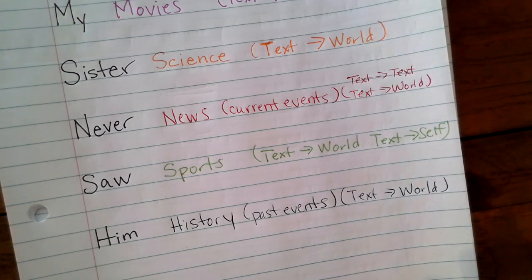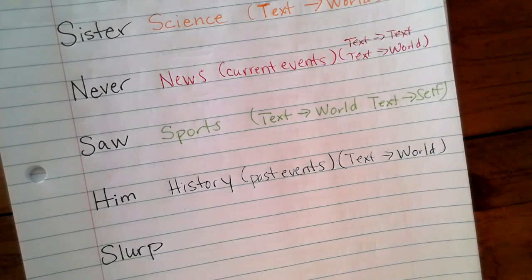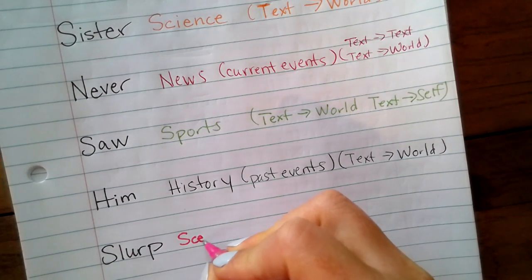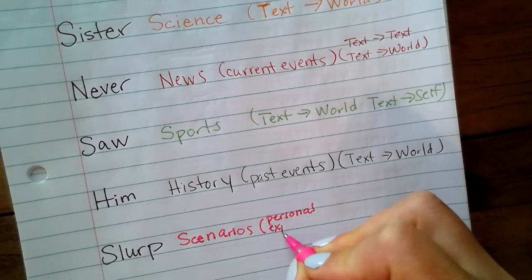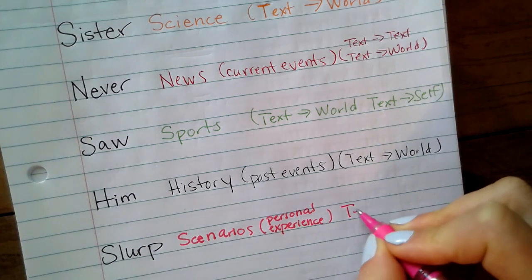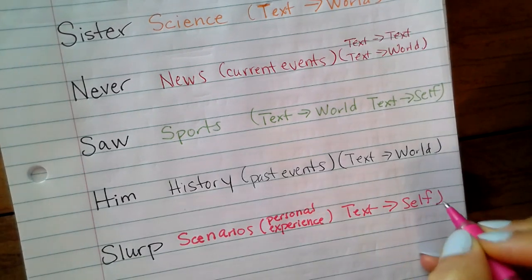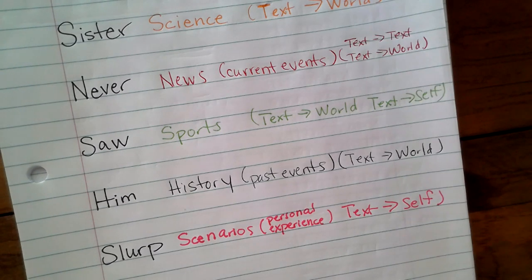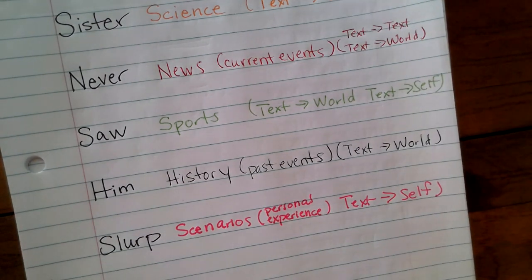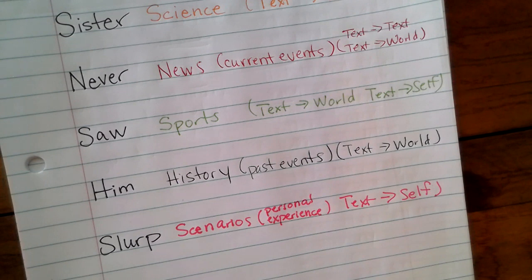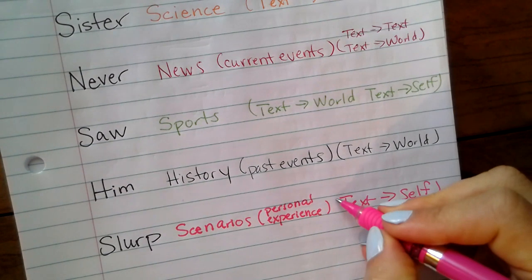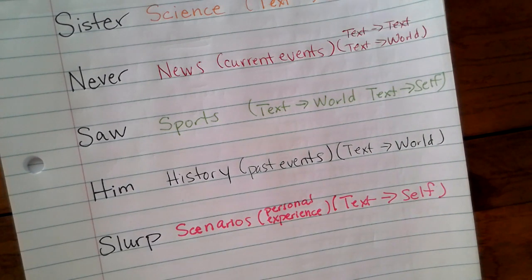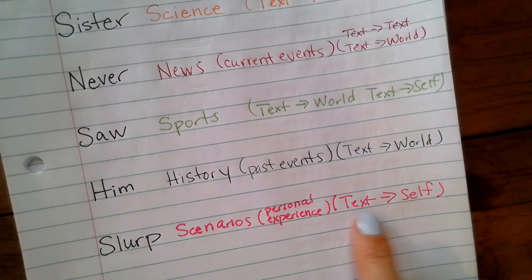The 'Slurp' in SLURPS is perhaps the easiest one — it represents Scenarios, which is a fancy way of saying your own personal experience. That's going to be a text-to-self connection. You can say 'I connect to this story because the same thing happened to me,' or 'I know this is true because in my own experience I have seen...' You can also use something that happened to your sister, best friend, or mother — it's a personal experience.